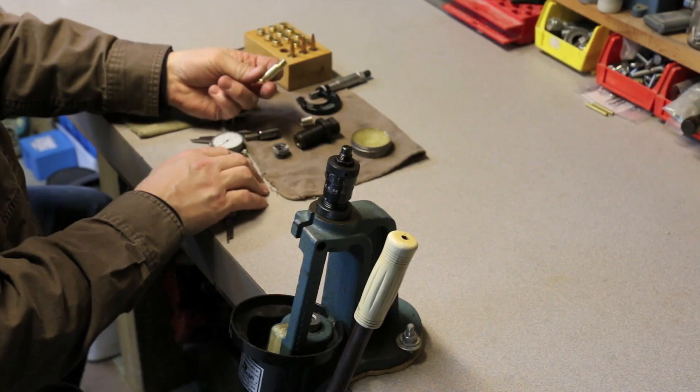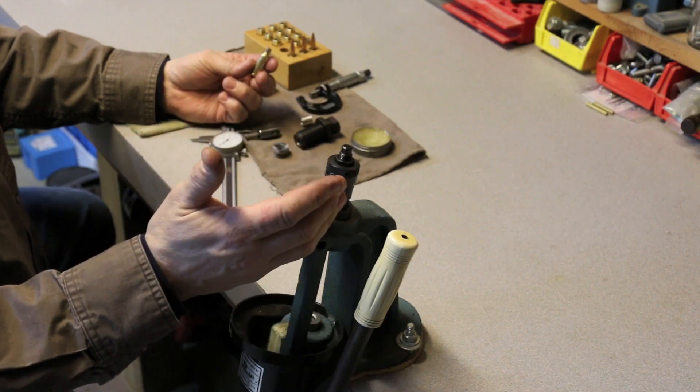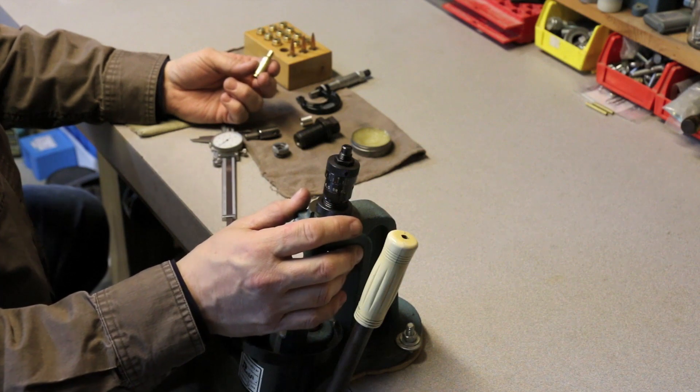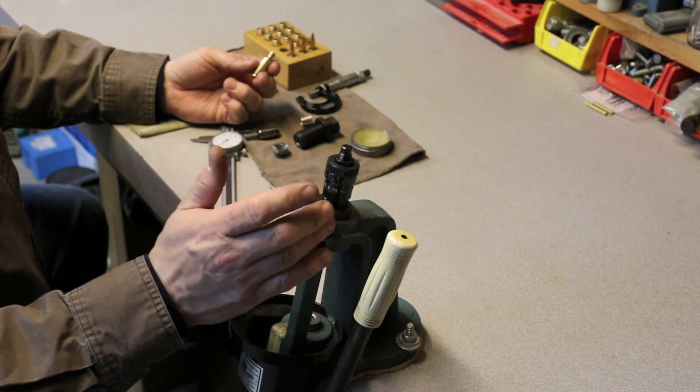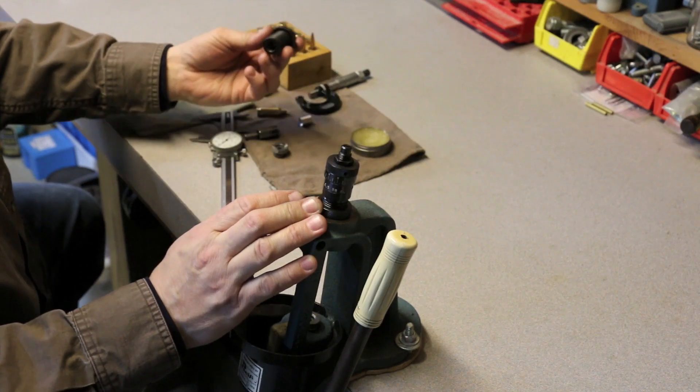This was a piece of brass that we had in the rifle that was tight. What we had done beforehand is run it through our shoulder setback die or bump die, and it was still tight in the web. So what we need to do is run it through our ring die.